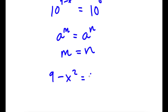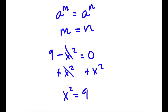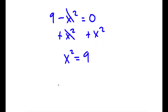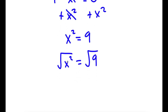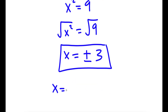So I have 9 minus x squared is equal to 0. We have a simple equation to solve. I'm going to add x squared on both sides, so these two cancel out and I have x squared is equal to 9. Taking the square root on both sides, the square root of x squared is x, and the square root of 9 can be positive or negative 3. So my two solutions are x equals 3 and x equals negative 3.